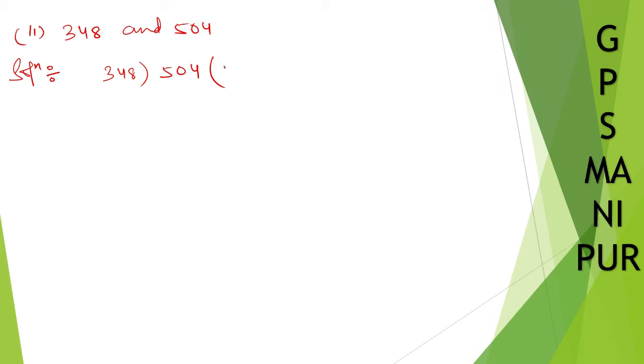So 348 times 1 is 348. Now subtract these two. 14 minus 8, it will be 6. Here it is 9, 9 minus 4, 5. 1 goes this side, so 4 minus 3, 1. Divide 348.